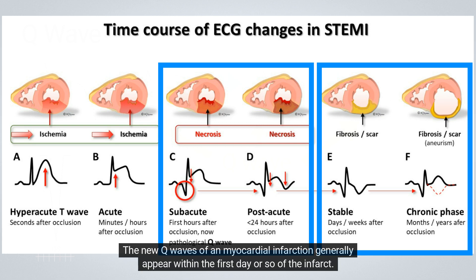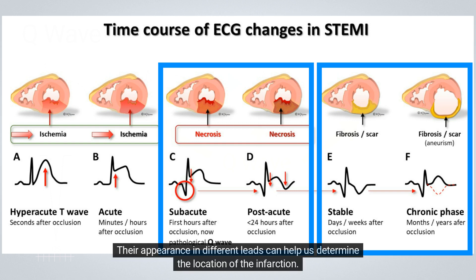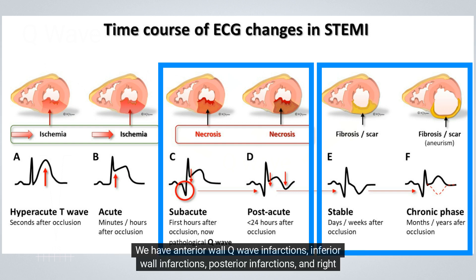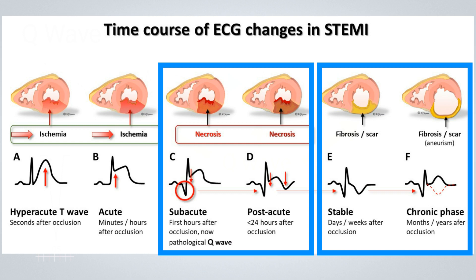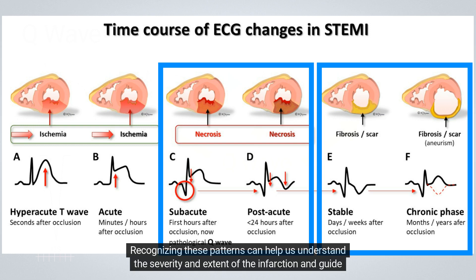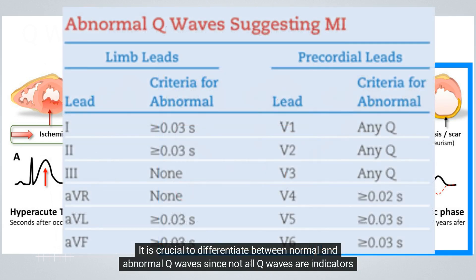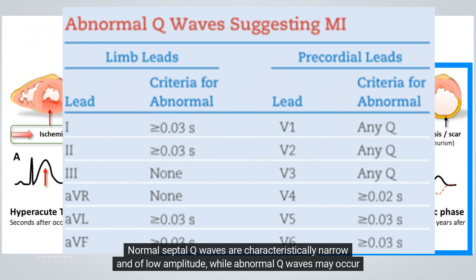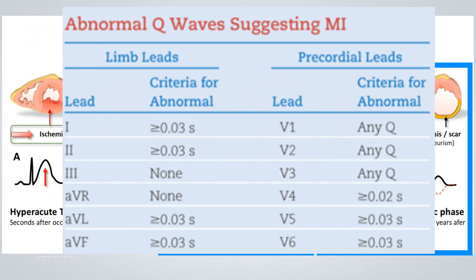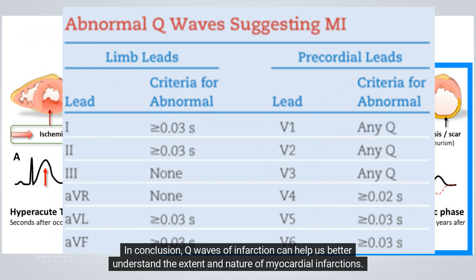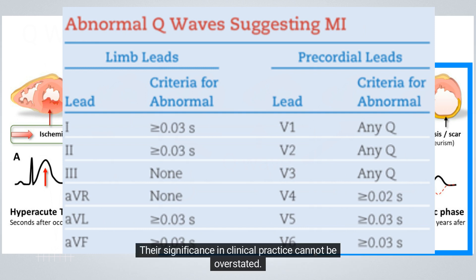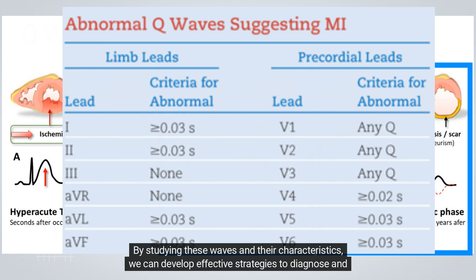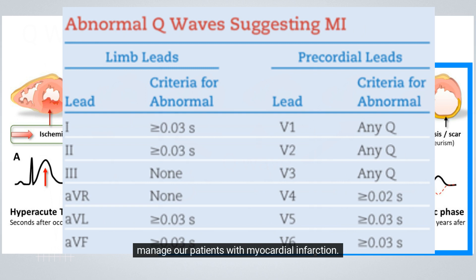The new Q waves of myocardial infarction generally appear within the first day or so of the infarct. Their appearance in different leads can help us determine the location of the infarction: anterior wall Q-wave infarctions, inferior wall infarctions, posterior infarctions, and right ventricular infarctions. Recognizing these patterns can help us understand the severity and extent of the infarction and guide treatment. It is crucial to differentiate between normal and abnormal Q waves, since not all Q waves are indicators of MI. Normal septal Q waves are characteristically narrow and of low amplitude, while abnormal Q waves may occur in leads such as aVL, D3, and aVF. Q waves of infarction can help us better understand the extent and nature of myocardial infarctions, and their significance in clinical practice cannot be overstated.